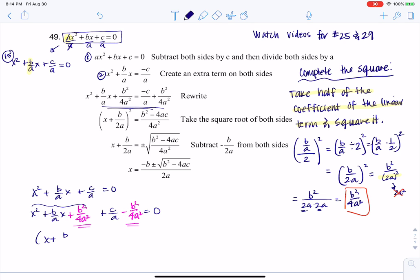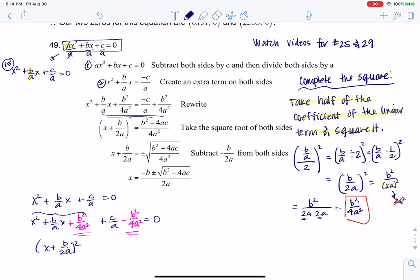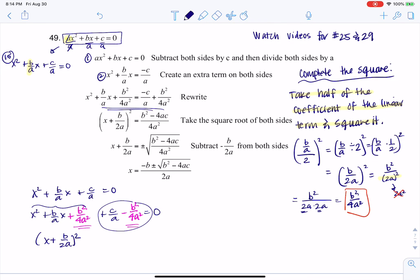This turns into x plus b over 2a squared. And then we can simplify this term and ultimately move it to this side of the equation. Now, I didn't exactly use that method when I showed you my workup here. So another thing you can do, instead of adding and subtracting the same term to the same side of the equation, what you can do is you can take x squared plus b over ax plus c over a is equal to 0. And you can just move the constant over. So I can just move c over a here.